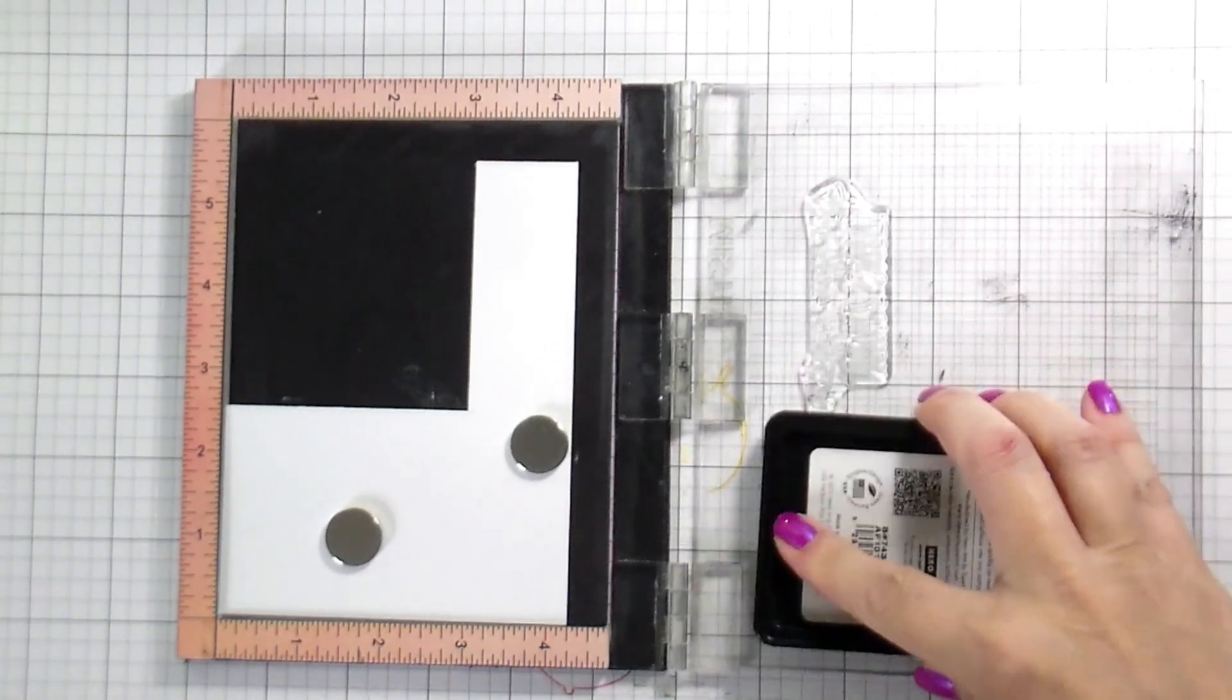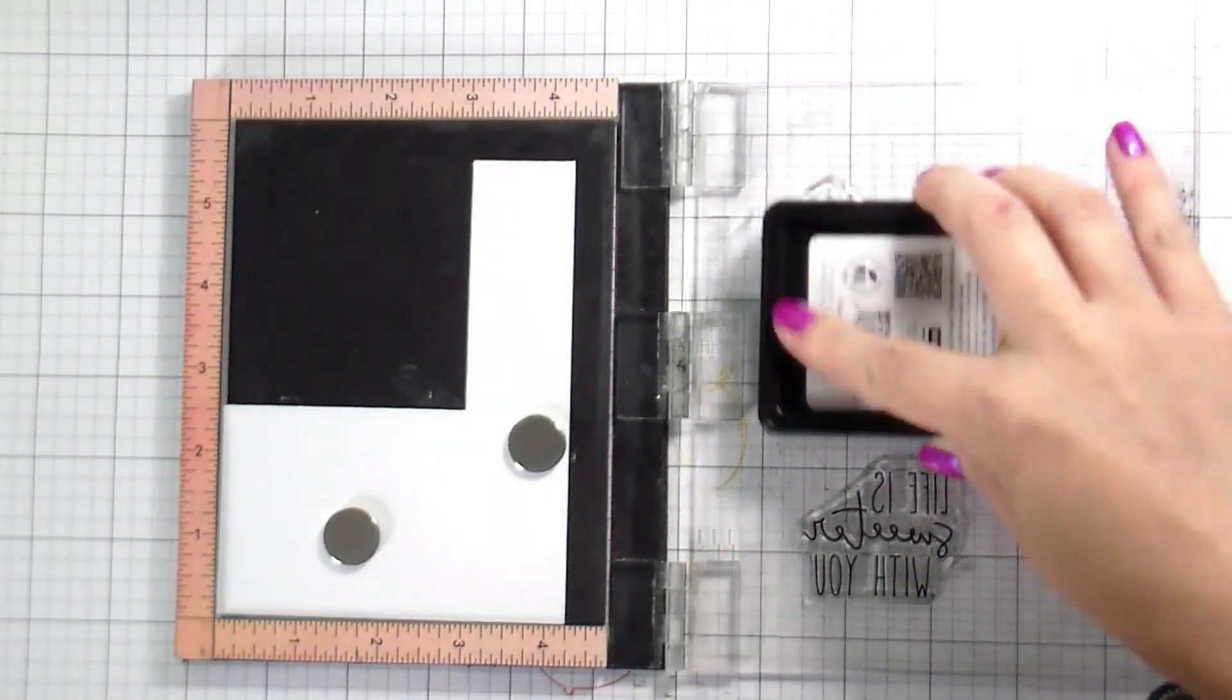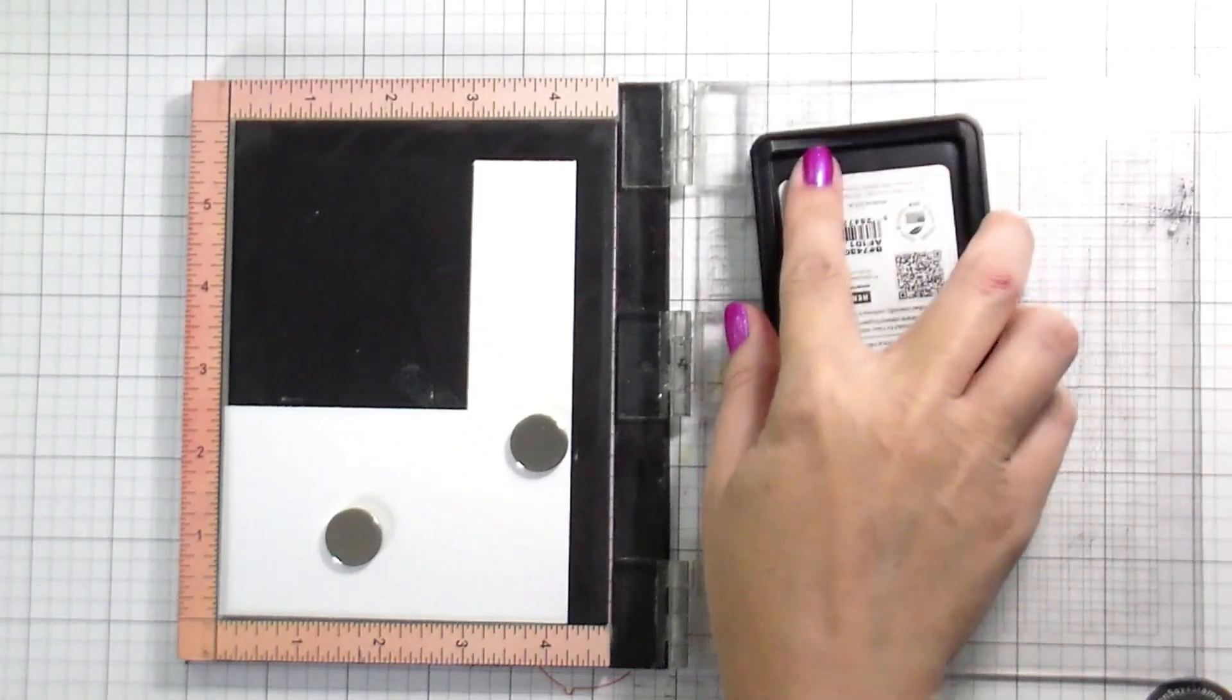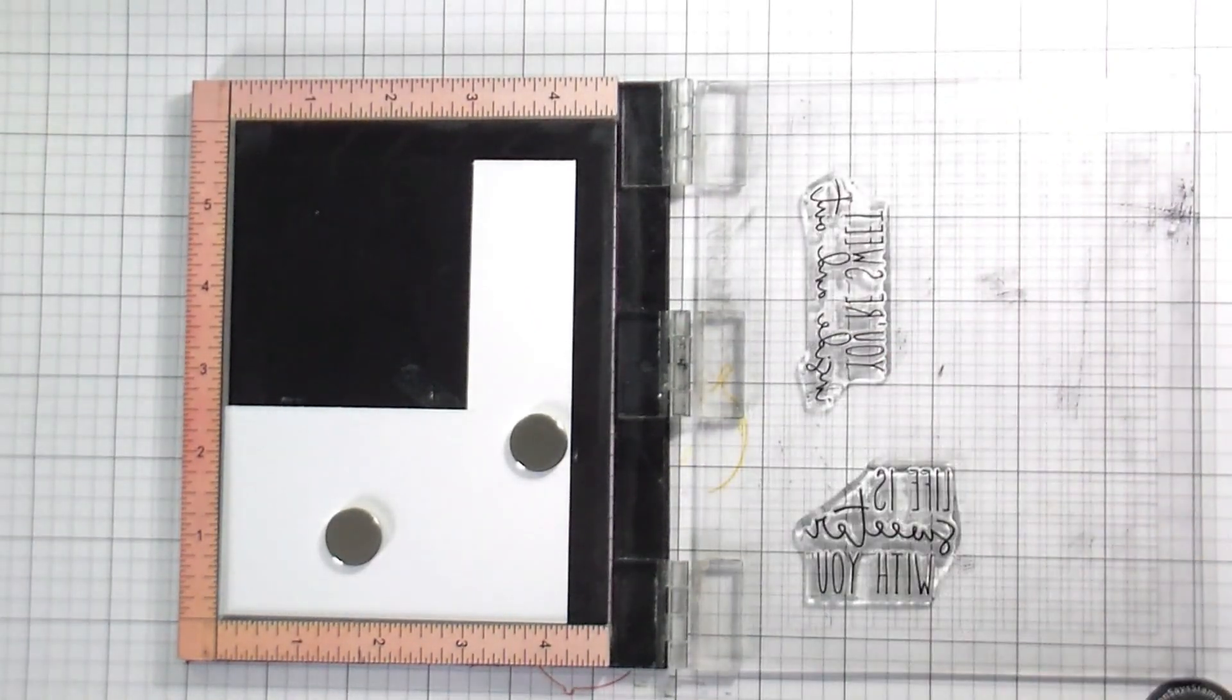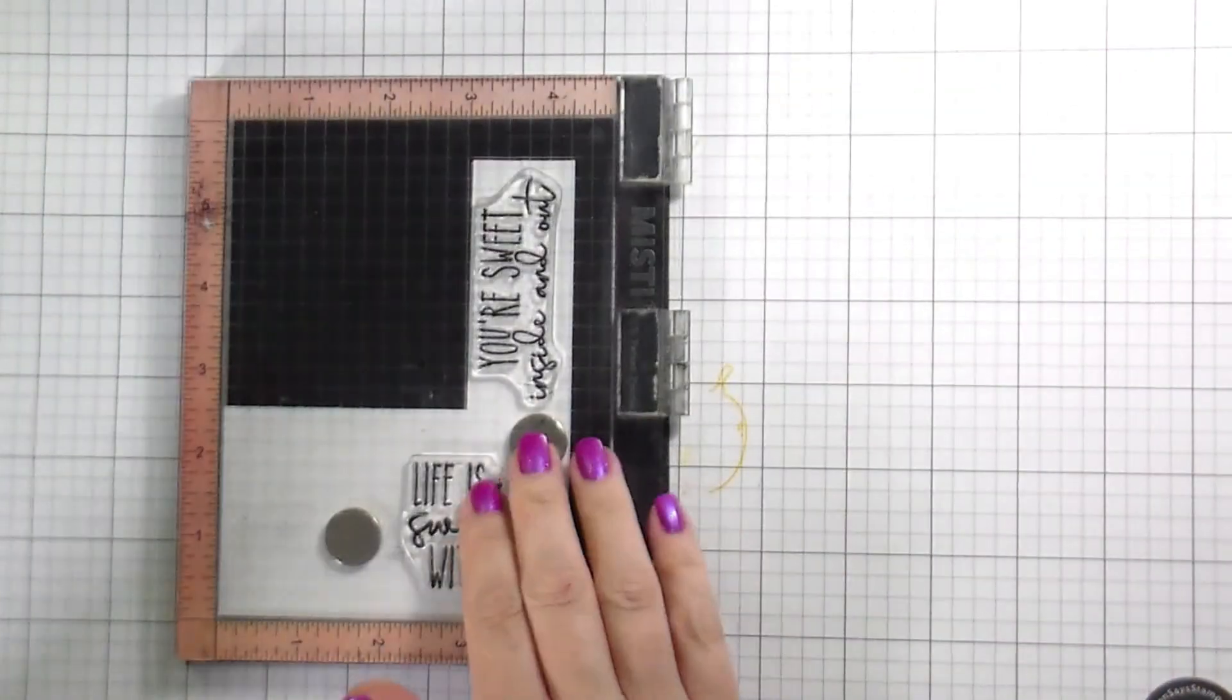Here, I'm just going to go ahead and stamp the sentiments in black, and then I'm going to use the coordinating dies to trim those out for both cards. So we gave her Tylenol, she slept normal.